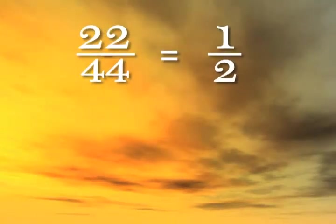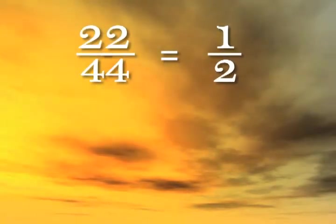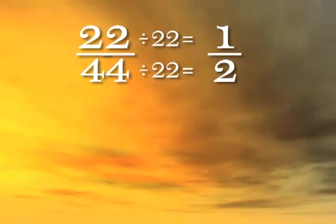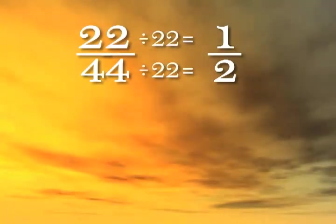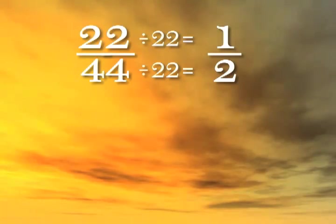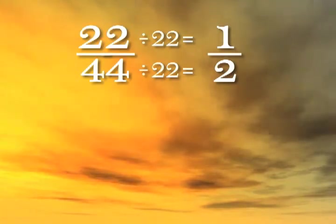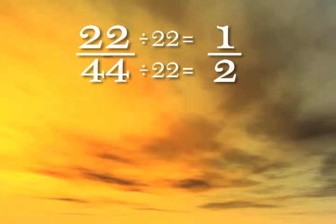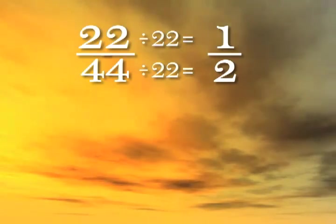Twenty-two over forty-four simplifies to one over two. One-half is the simplified fraction. It's readily understandable at a glance. But you're not reducing the fraction, you're simplifying it. And by simplifying it, you're making it easier to understand or solve. But its value never changes.